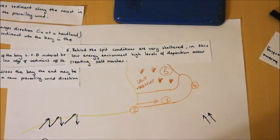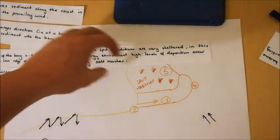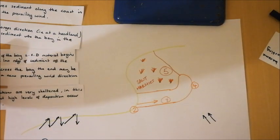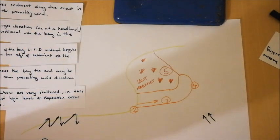And we can put our statement again. So behind the spit, conditions are very sheltered. In this low energy environment, high levels of deposition occur, creating a salt marsh. Salt marshes may actually be submerged during periods of high tide or storm weather. So anything that's growing in there, any vegetation, has to be able to cope with that.